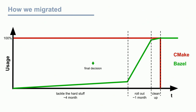What you see here is the time axis and the usage of our CI systems. In red is the CMake system, which kept running in the background the whole time and then at some point was shut down. In blue is the Bazel system, which first slowly and then very rapidly was able to build our software stack. At the end, it's the only tool we have left.